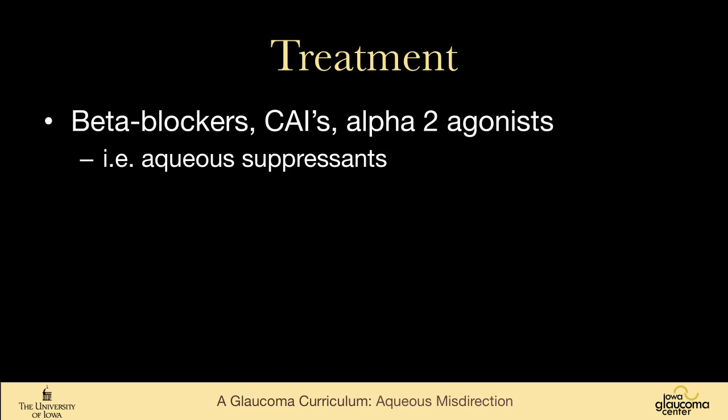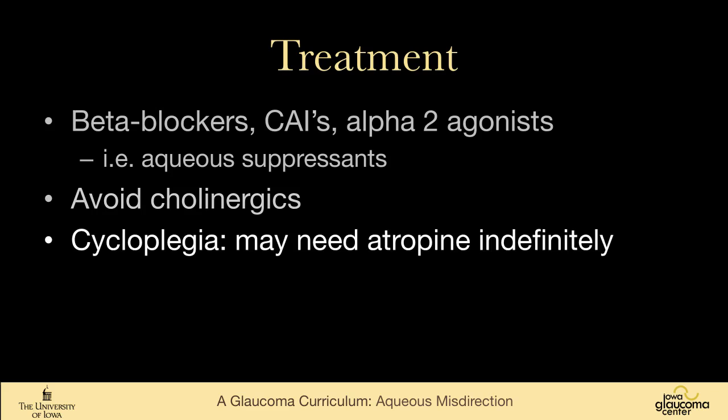You treat this with aqueous suppressants: beta blockers, carbonic anhydrase inhibitors, alpha-2 agonists. You should avoid cholinergics like pilocarpine — they tend to move the lens-iris diaphragm forward, which is not helpful. Cycloplegia is a cornerstone of therapy, and you may need to use atropine indefinitely in these patients.